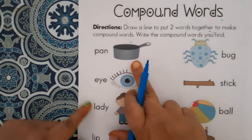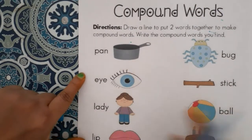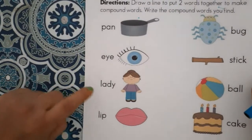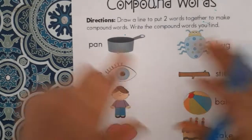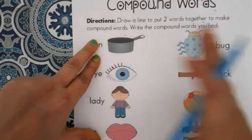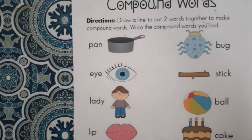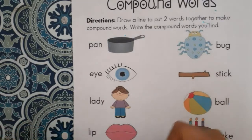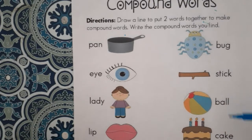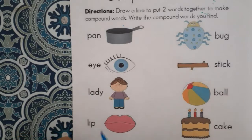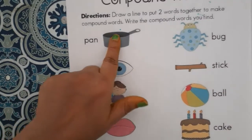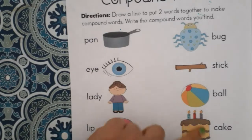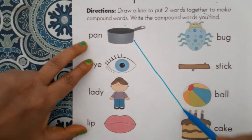We have to match words on the left side with words on the right side. From the left we match to the right. Looking at the pictures: bug, stick, ball, cake, chair — let's find the matches. Pan plus cake gives us pancake.